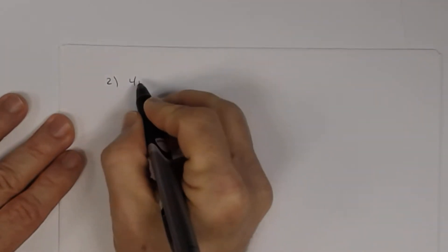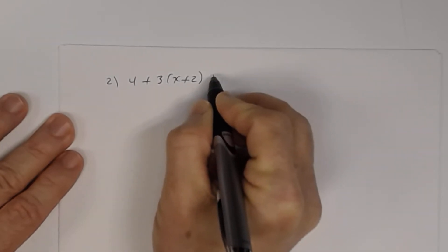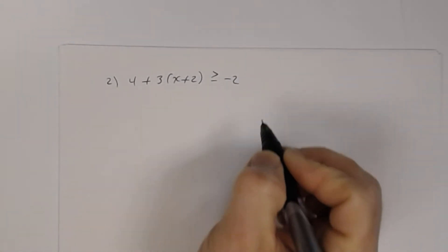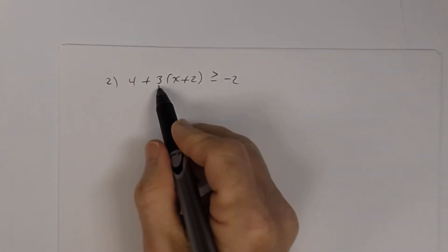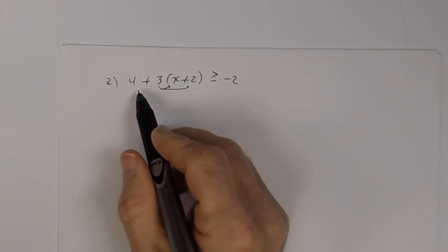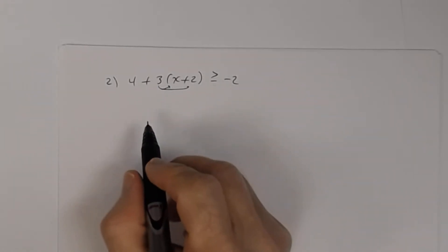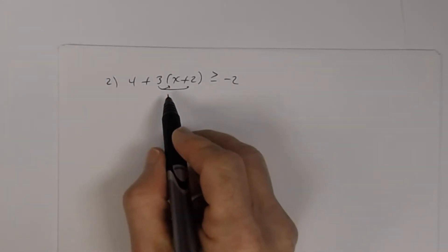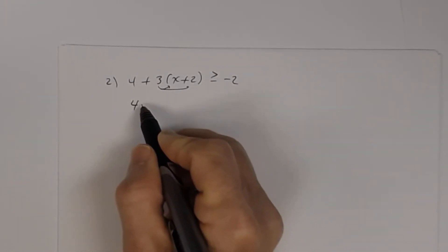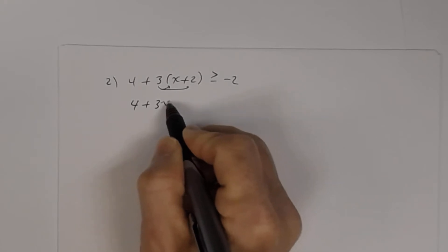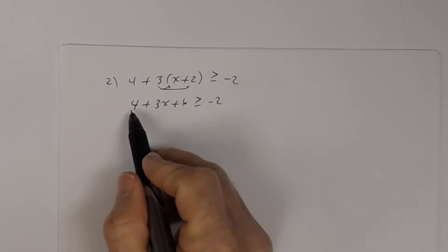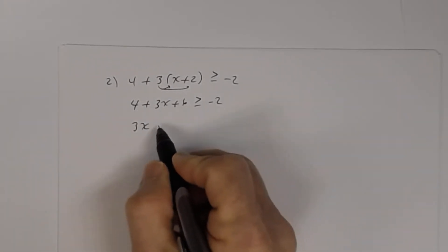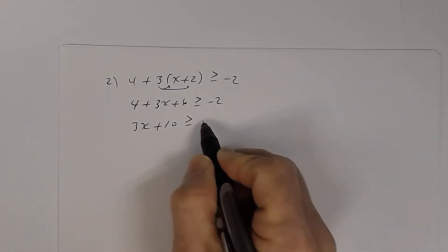Number two: we have 4 plus 3 times (x plus 2) is greater than or equal to negative 2. Use the distributive property first — don't add 4 plus 3 first. Multiply before you add. So we get 4 plus 3x plus 6 is greater than or equal to negative 2. Combining like terms on the left: 3x plus 10 is greater than or equal to negative 2.